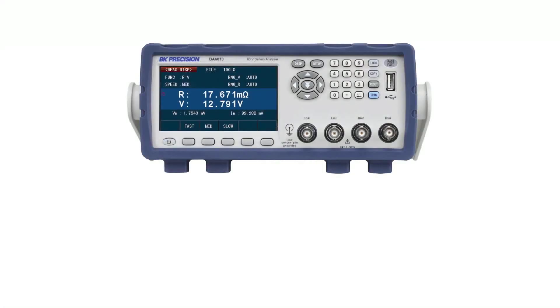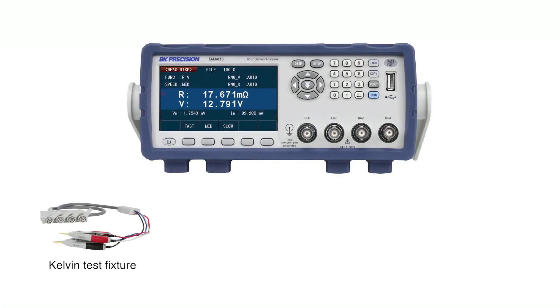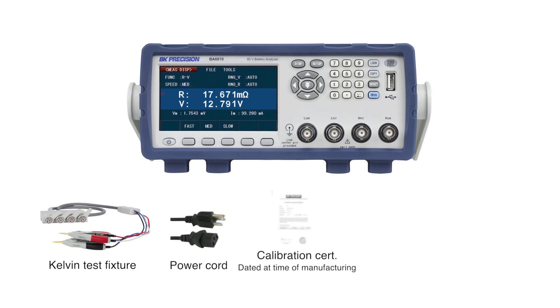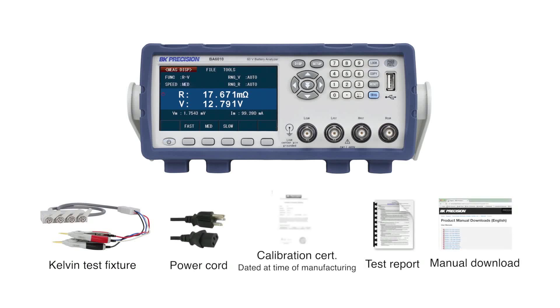The accessories include a Kelvin test fixture, power cord, certificate of calibration, and test report. The user manual is available for download. For more information, visit bkprecision.com.